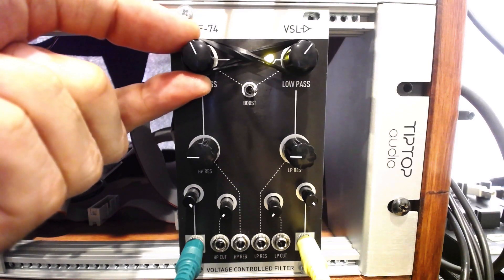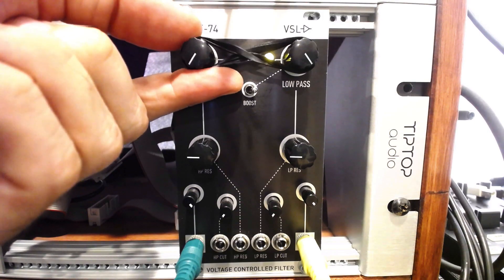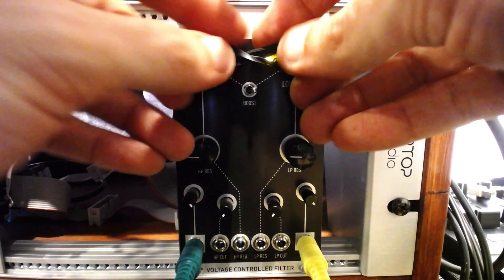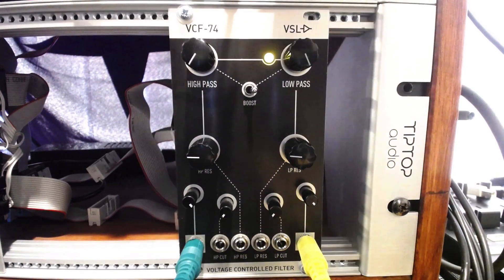Modules with knobs bolted to the panel are safer for this technique, so some pots may be better than others. This is an imperfect technique, so take care with your modules and don't put too much physical strain on them when experimenting.